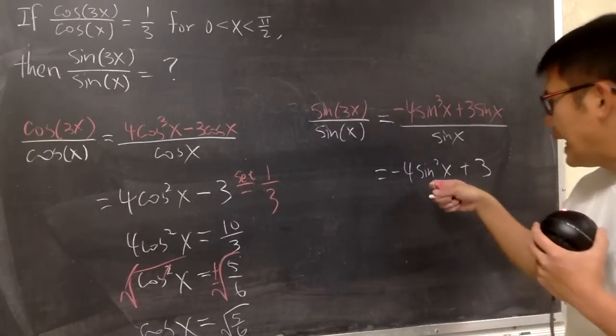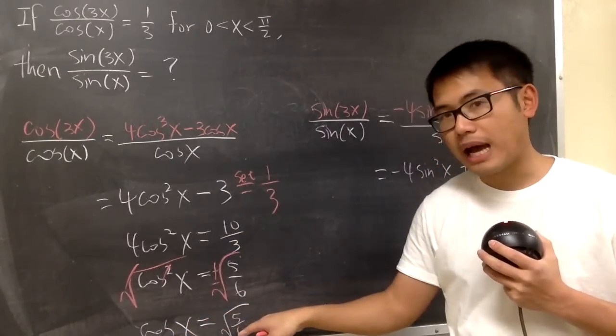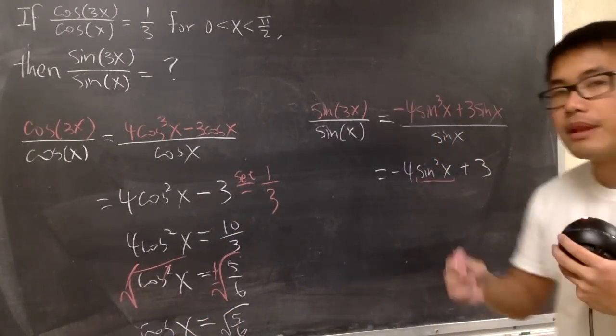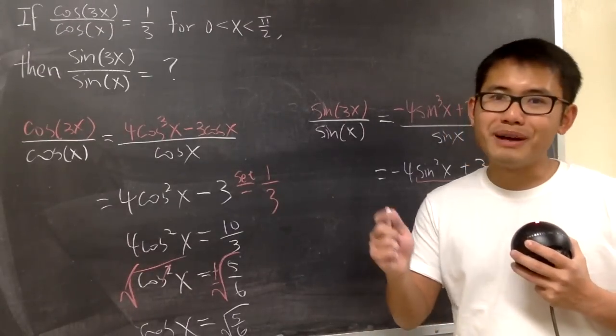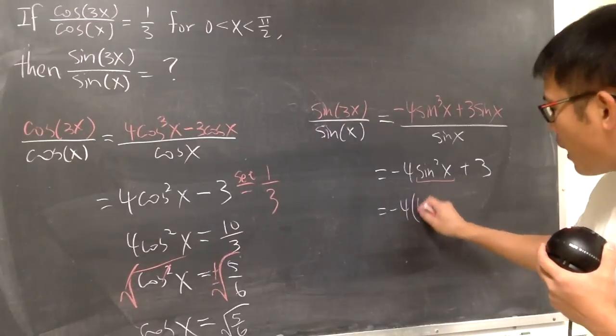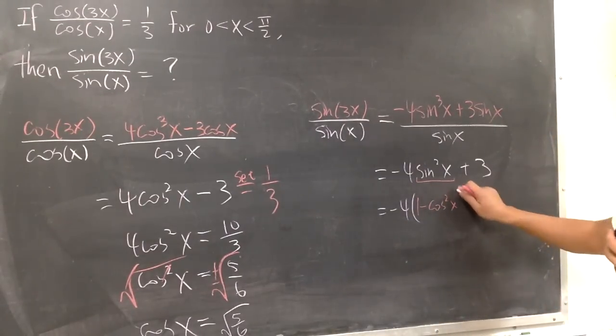I have sin²x right here. I know cos(x) is equal to that. So I will just make a quick conversion, because we know sin²x is the same as 1 - cos²x. So this is -4 times (1 - cos²x), like this.